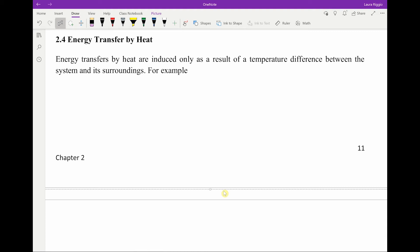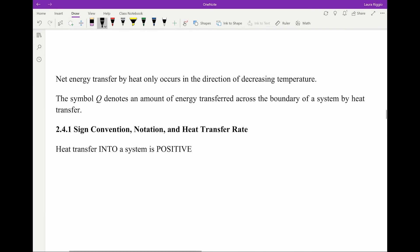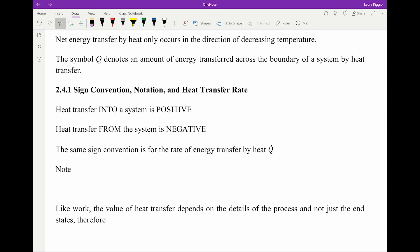Energy transfer by heat is induced as a result of a temperature difference between the system and the surroundings. For example, if I have a hot plate and a container of gas, the energy of the gas is increased even though no work is done. The net energy transfer by heat only occurs in the direction of decreasing temperature, so heat only goes from hot to cold. Heat can't go from cold to hot.